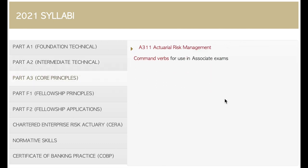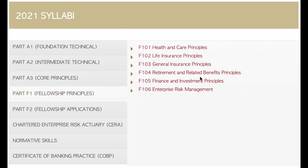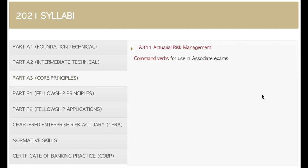Next are the core principles: actuarial risk management, the notorious CA1 exam. This one is an absolute beast with probably the highest failure rate — it causes nightmares for actuarial students around the world. It's very difficult because essentially you're being tested on all the specialist areas you would later choose from: risk management, finance and investment, retirement and related benefits, general insurance, life insurance, and healthcare principles — all of these are examinable in this one exam.